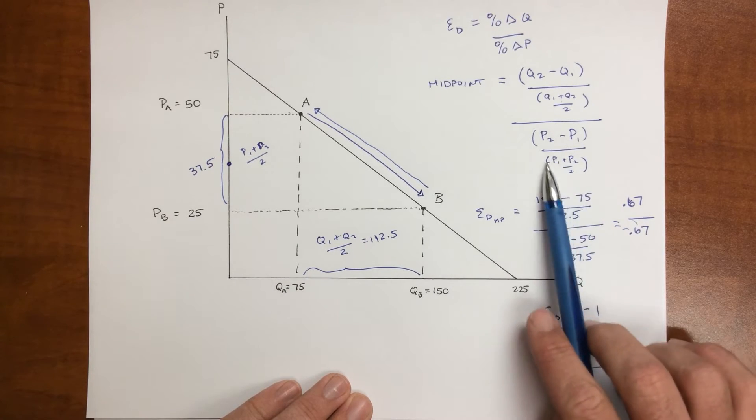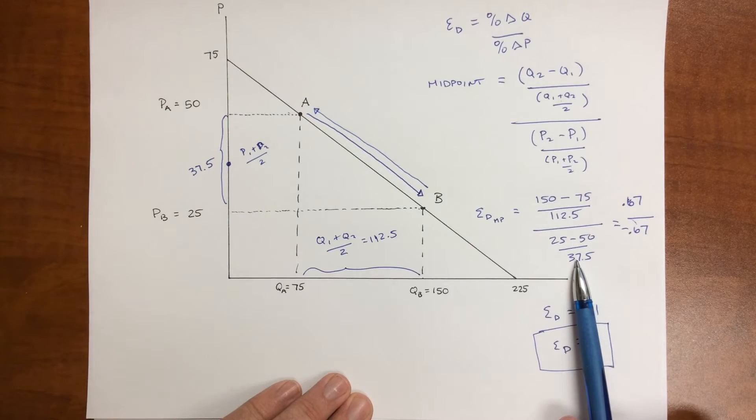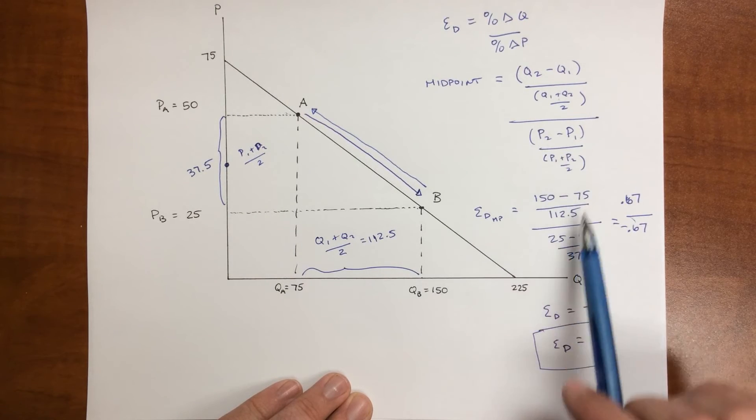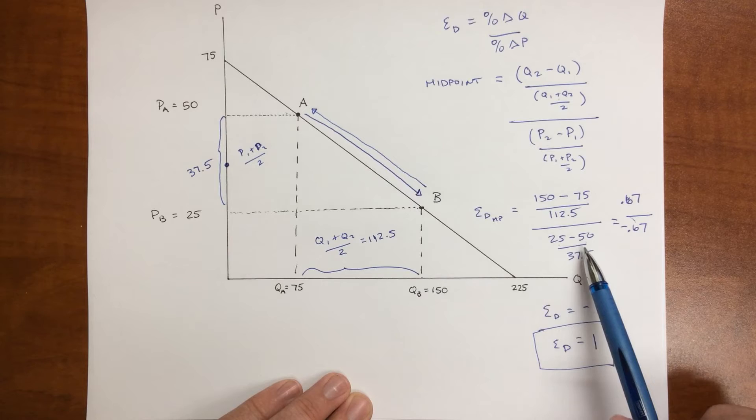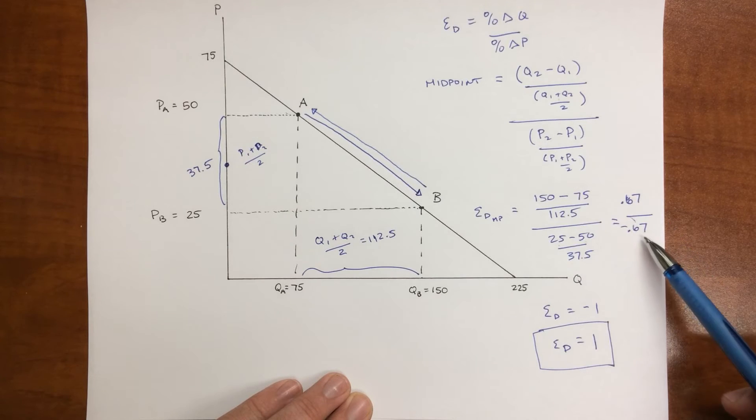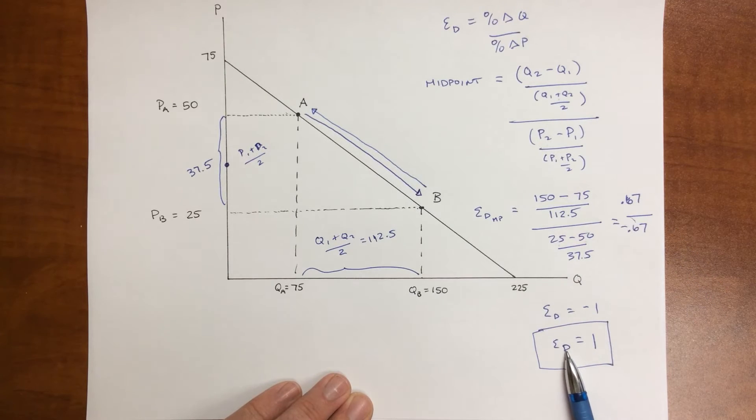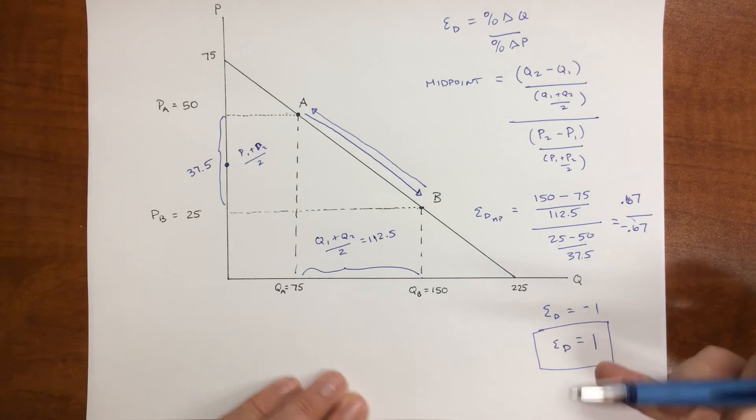The bottom P1 plus P2 stays the same, 37.5. And now just those two switch, so we get 50 minus 25. That number is positive. The overall number is negative, and it gives us the exact same answer.